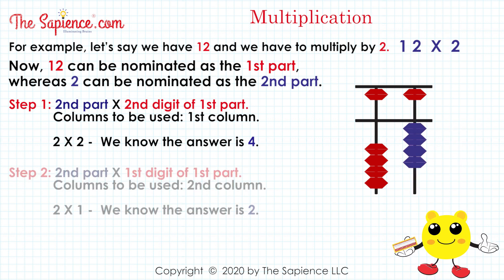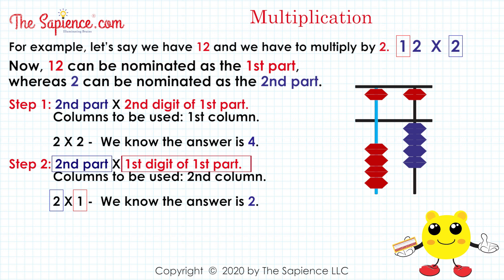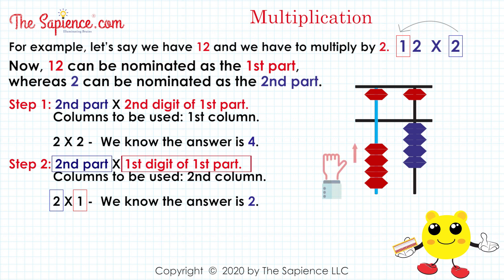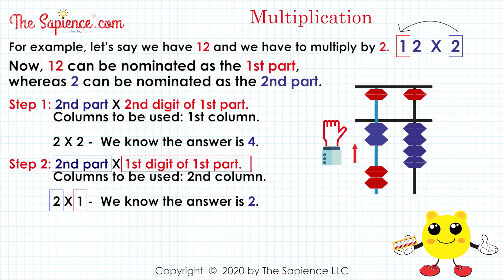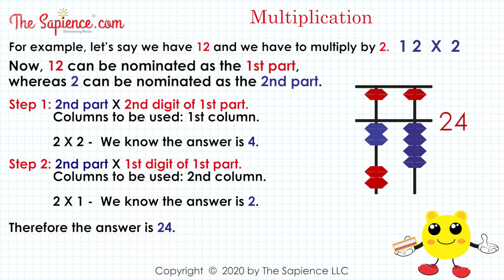Step 2: second part multiplied by first digit of first part. Columns to be used: second column. 2 multiplied by 1, we know the answer is 2. Now we will add 2 onto the second column. Therefore the answer is 24.